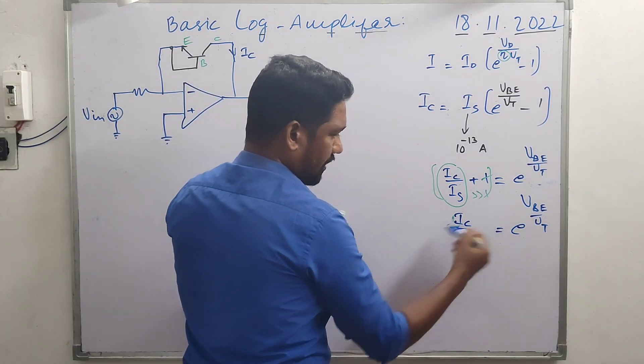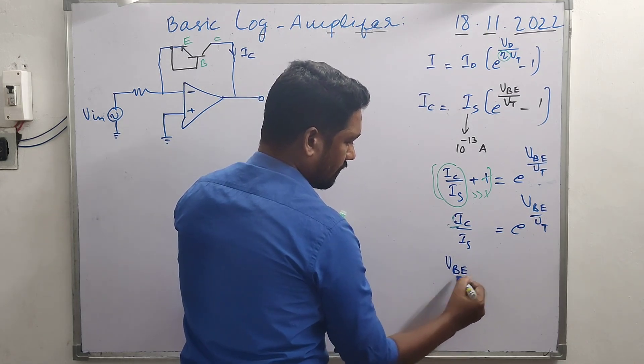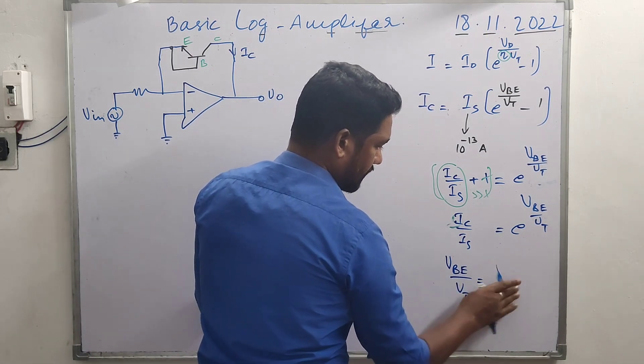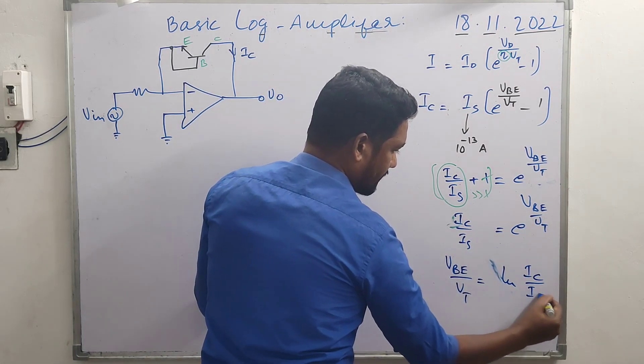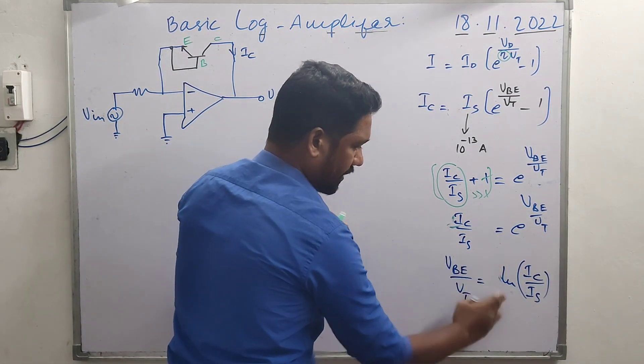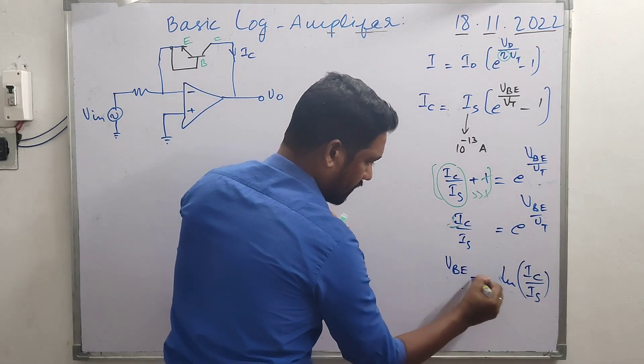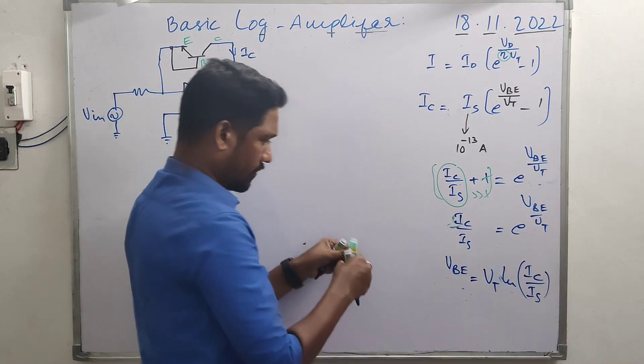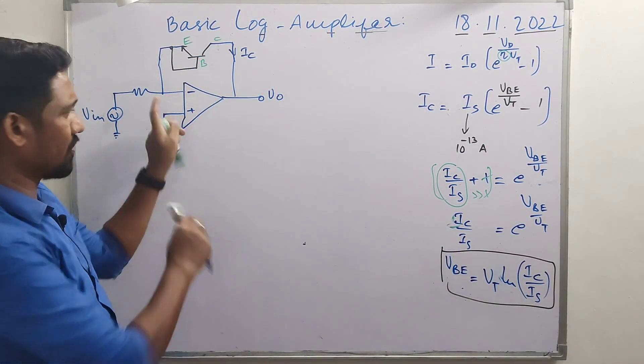We apply ln on either side. What do we have? V_BE/V_t = ln(I_C/I_s), where I_C is collector current and I_s is emitter saturation current. From this, V_BE = V_t × ln(I_C/I_s). We have to plug in this equation somewhere so that we can show the output is log of something.